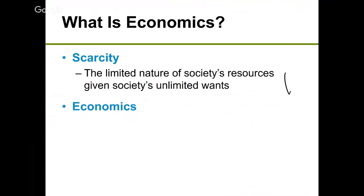Imagine if President Trump said that if everybody votes for him and he's reelected in 2020, he will give everybody in America a free house. Would that be possible? Does our society have enough resources to produce a house for everybody in America in a given time period? Probably not — we don't have enough bricks, foundations, or labor to produce that many houses.